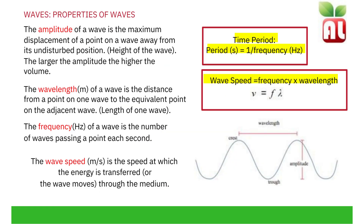Properties of waves. The amplitude of a wave is the maximum displacement of a point on a wave away from the undisturbed position, or the height of the wave. The larger the amplitude, the higher the volume of sound. The wavelength, measured in meters, is the distance from one point on a wave to the equivalent point on the next wave, or the length of one wave. The frequency, measured in hertz, is the number of waves passing a point each second, or the number of waves per second.